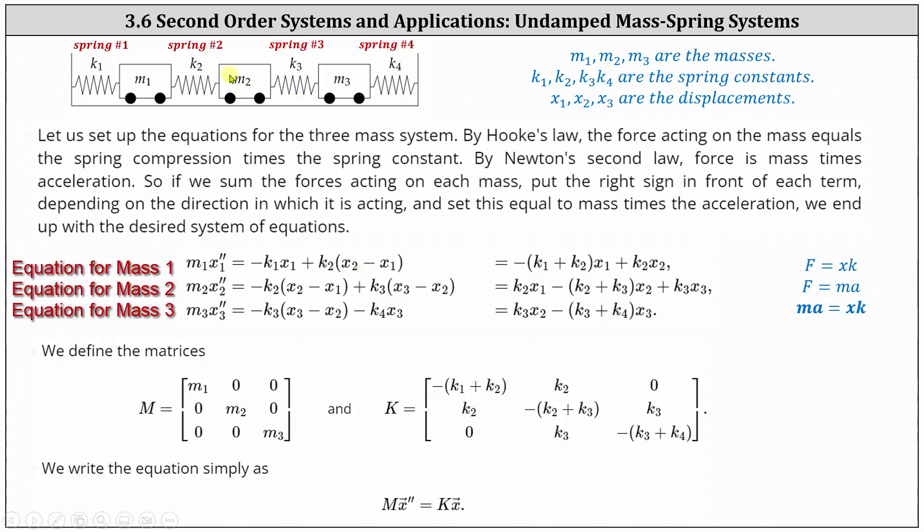As mass two moves to the right, spring two is stretched, and therefore the force is going to be to the left, giving us a negative force, given by negative K2, where K2 is the spring constant, times the amount of spring stretch, given by the difference of X2 and X1.